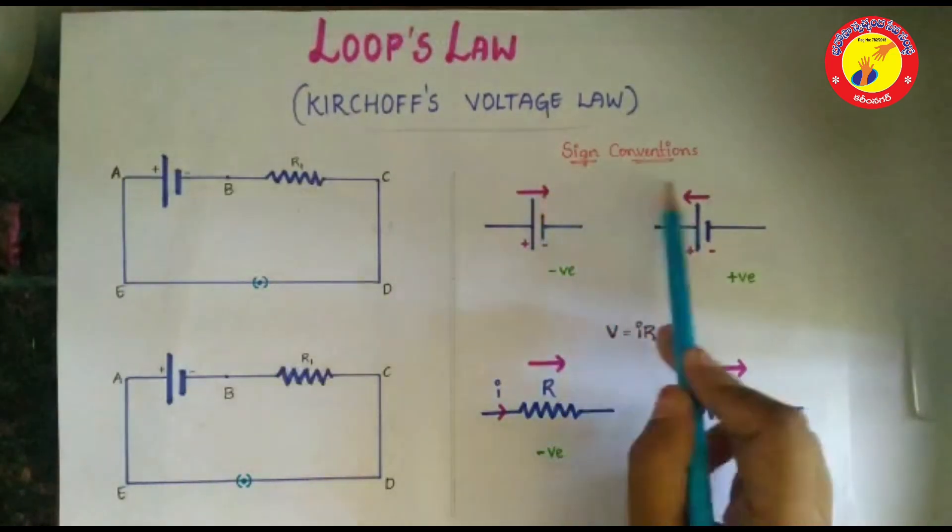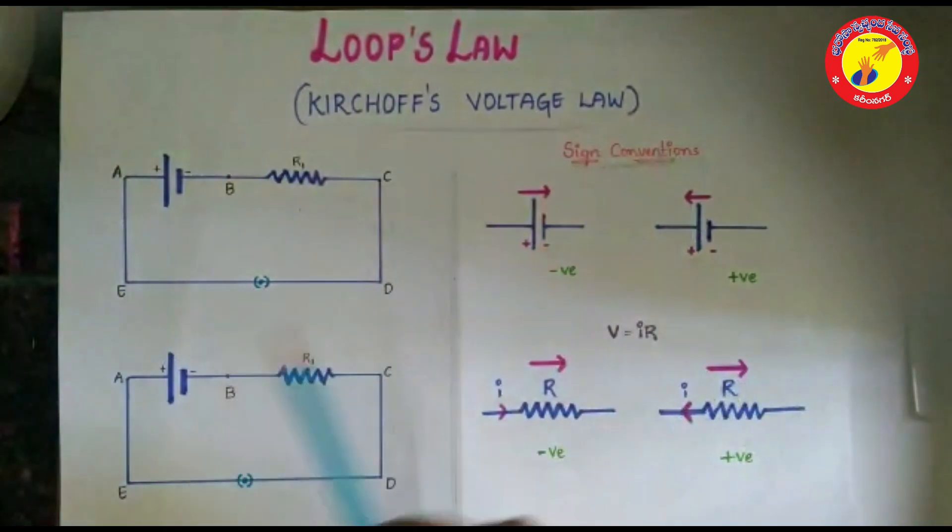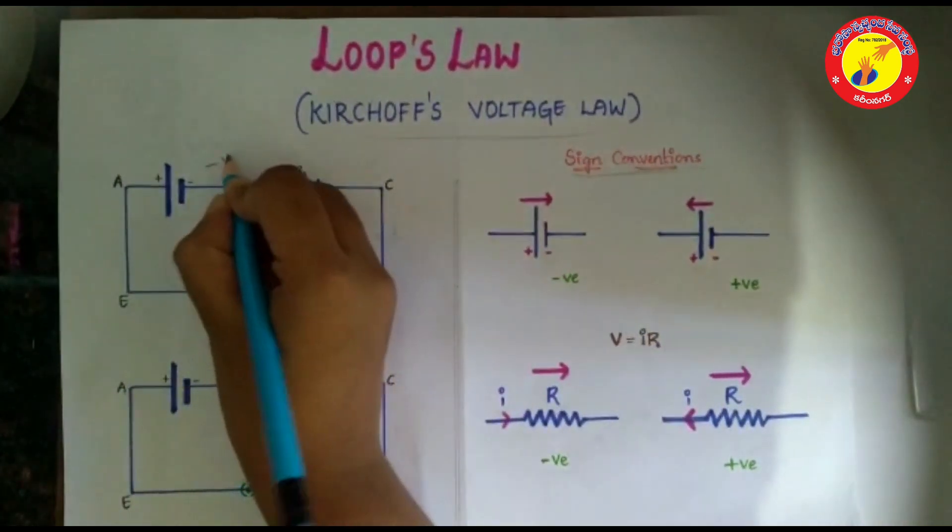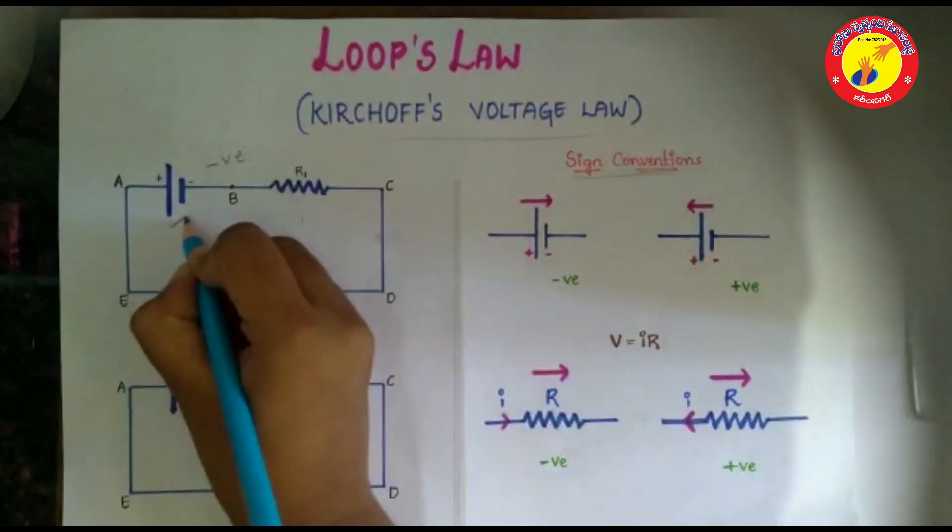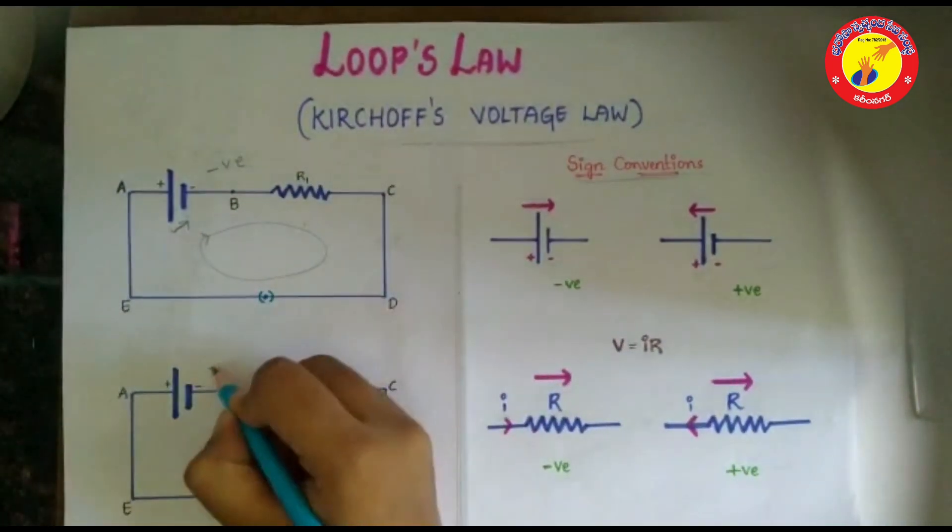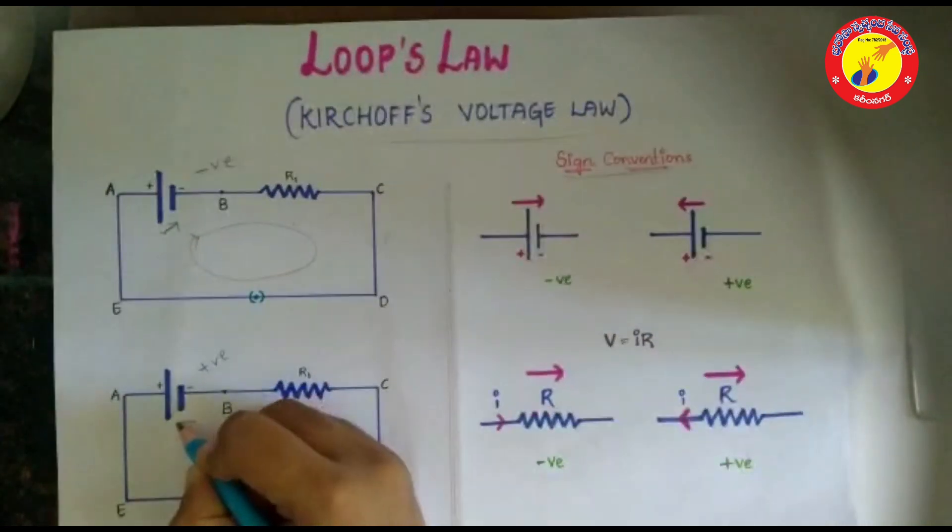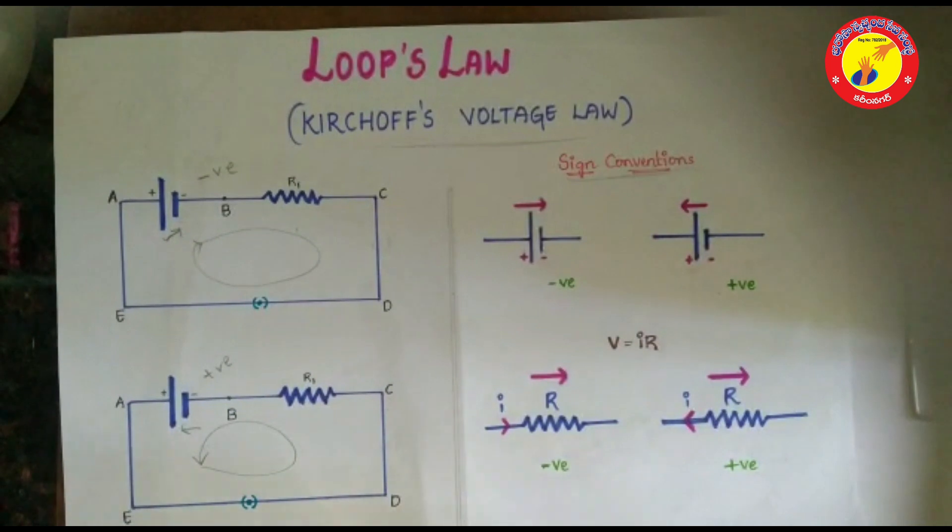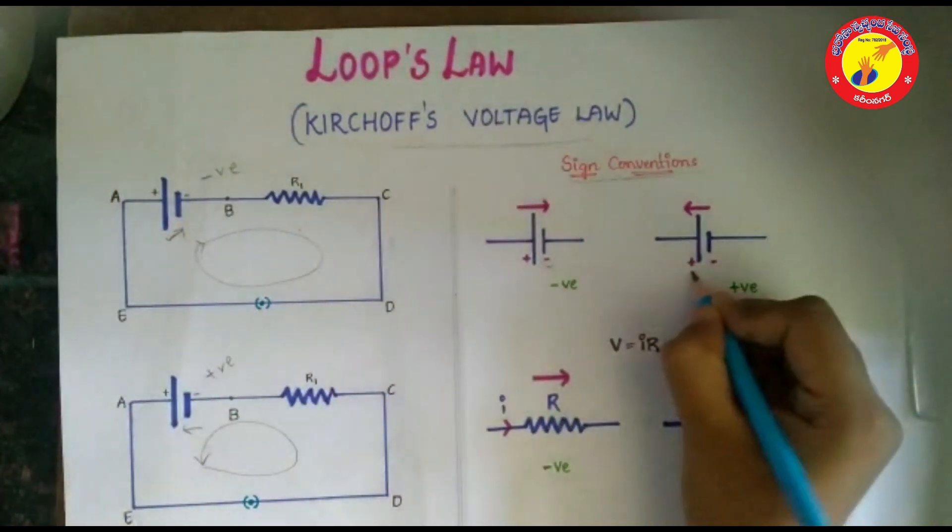Sign convention for loop law. In a loop, when we come across a battery, EMF is taken as negative when we move from positive terminal to negative terminal of a battery. It is taken as positive when we move from negative to positive terminal of a battery. It is easy to remember as the last terminal is taken as the sign.